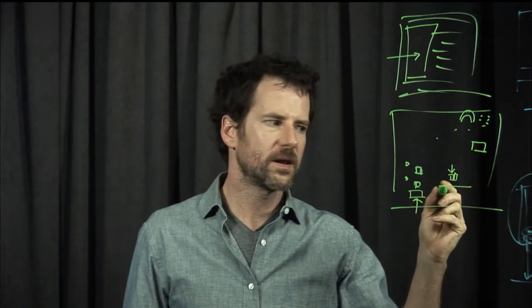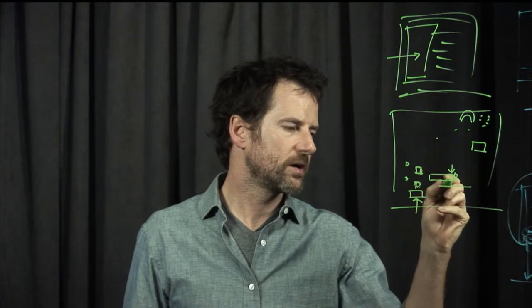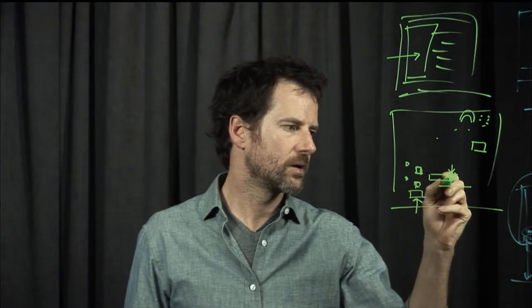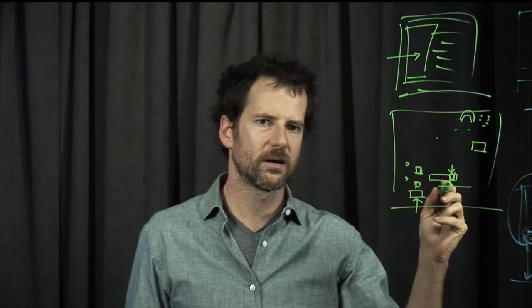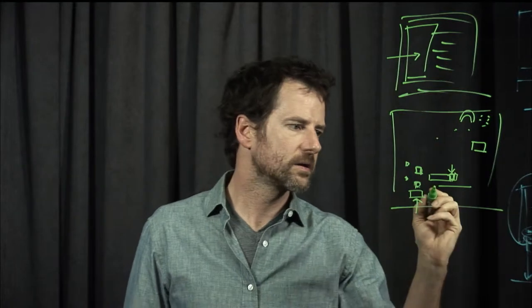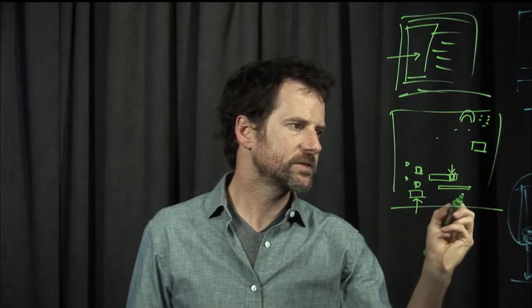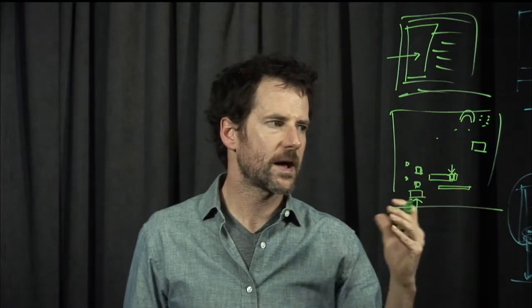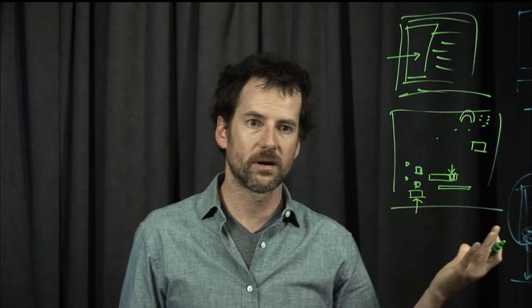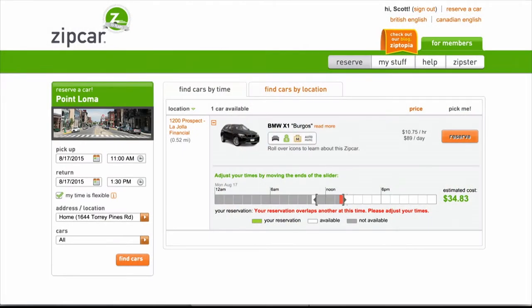One thing that you may not realize is there's a gray chunk here and an orange chunk here. I've got an alert that says your reservation overlaps another reservation. Normally, when something is grayed out, that means it's unavailable.